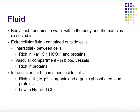When we talk about body fluids, we're talking about the water within our body as well as the particles dissolved in it. We have our extracellular fluid and intracellular fluid. Extracellular is further divided into interstitial and plasma. Plasma is in the vascular compartment. The interstitial fluid is rich in ions like sodium, chloride, bicarbonate, and protein. Our plasma is rich in proteins. Our intracellular fluid is rich in potassium, magnesium, inorganic and organic phosphate and proteins, and low in sodium and chloride.